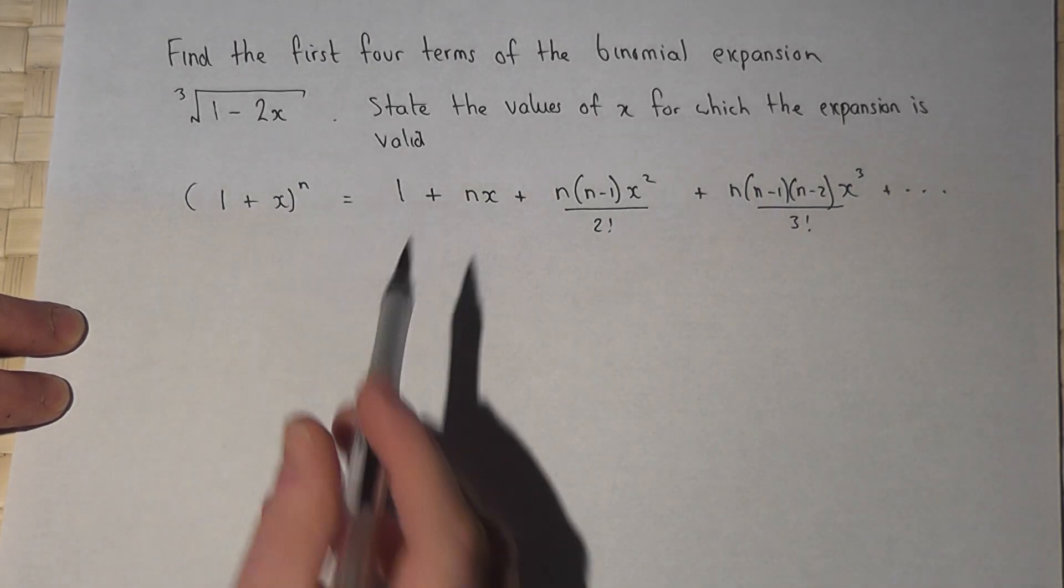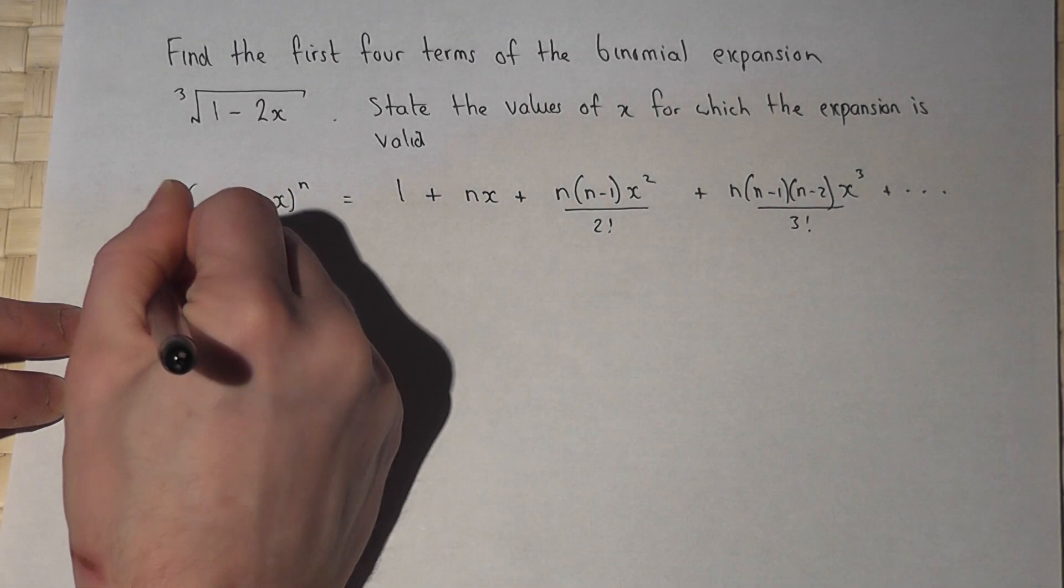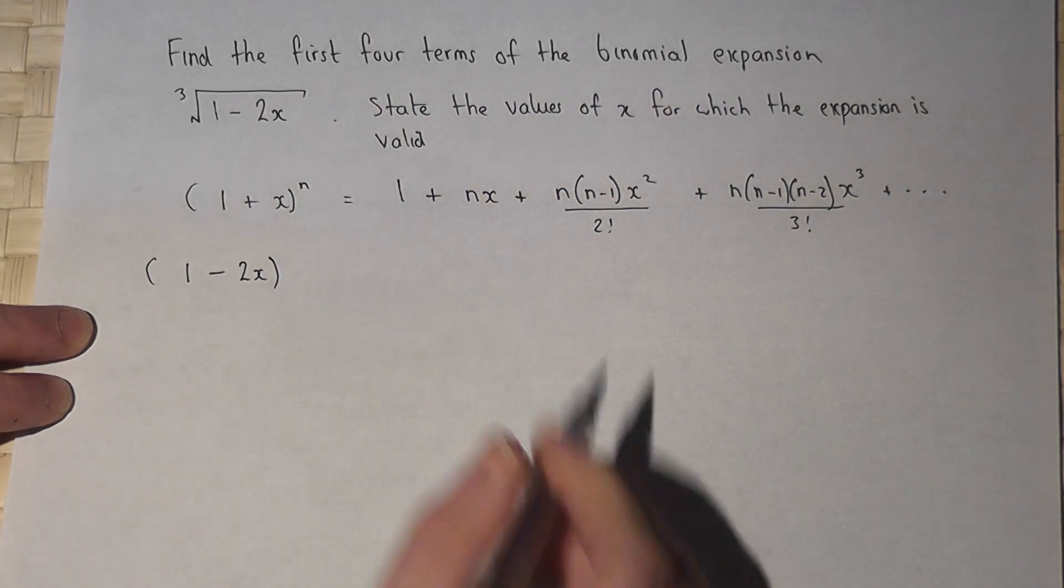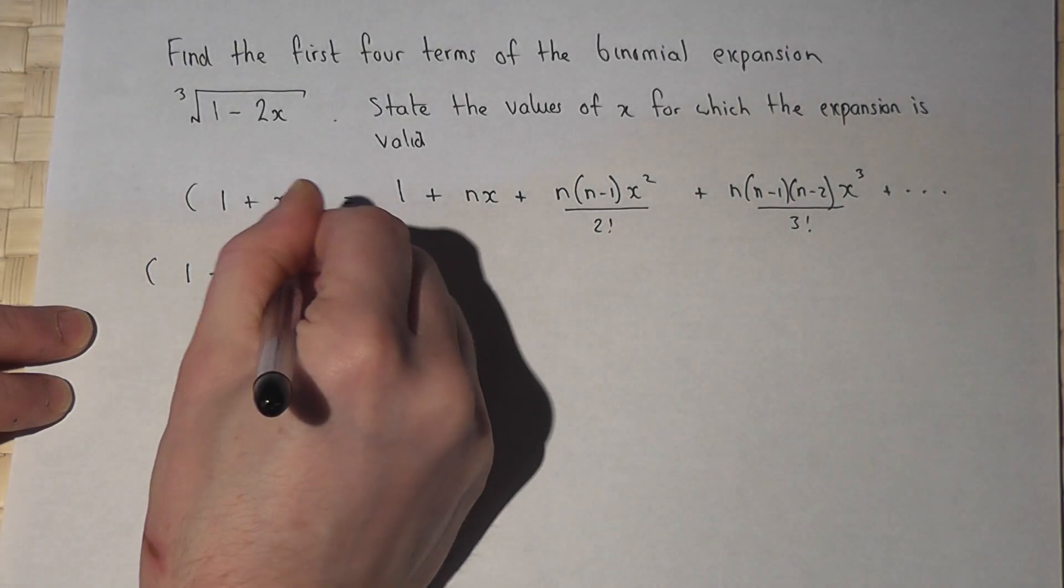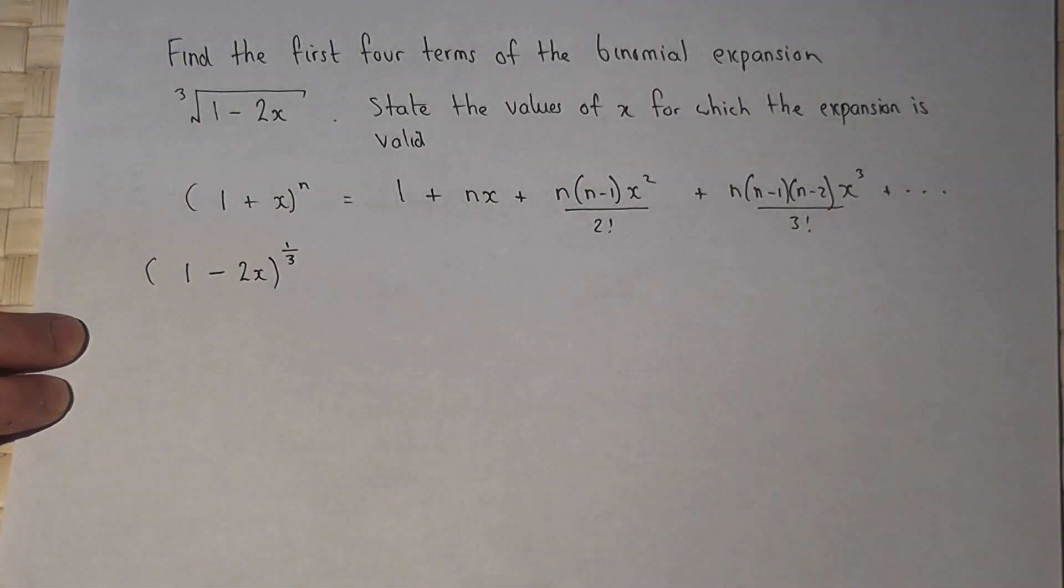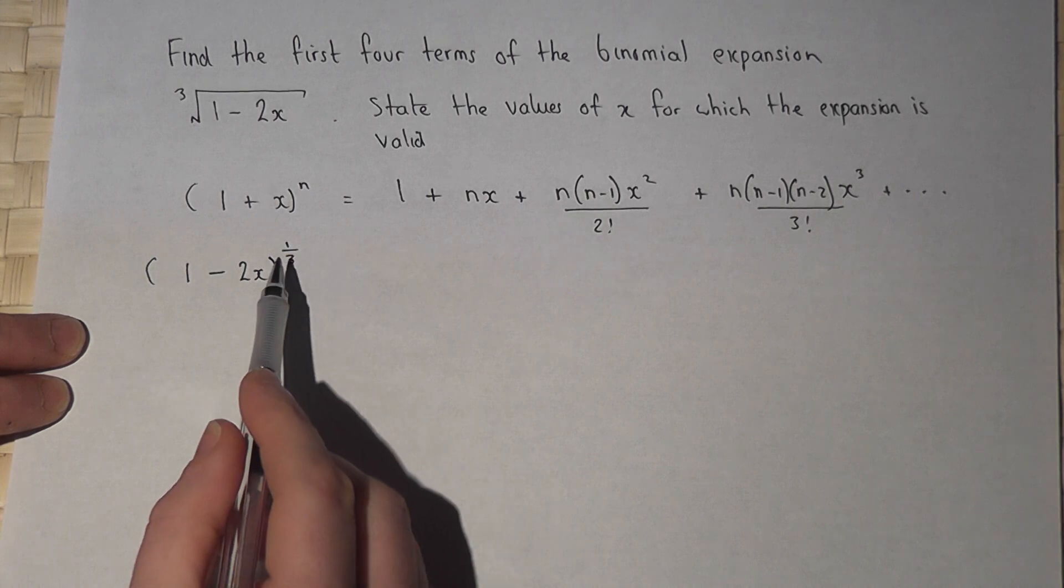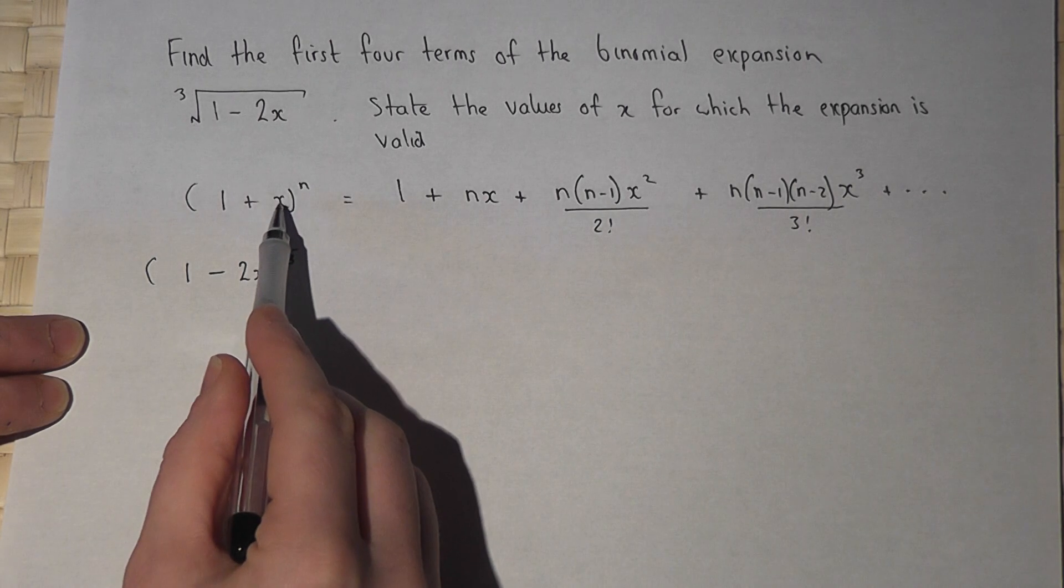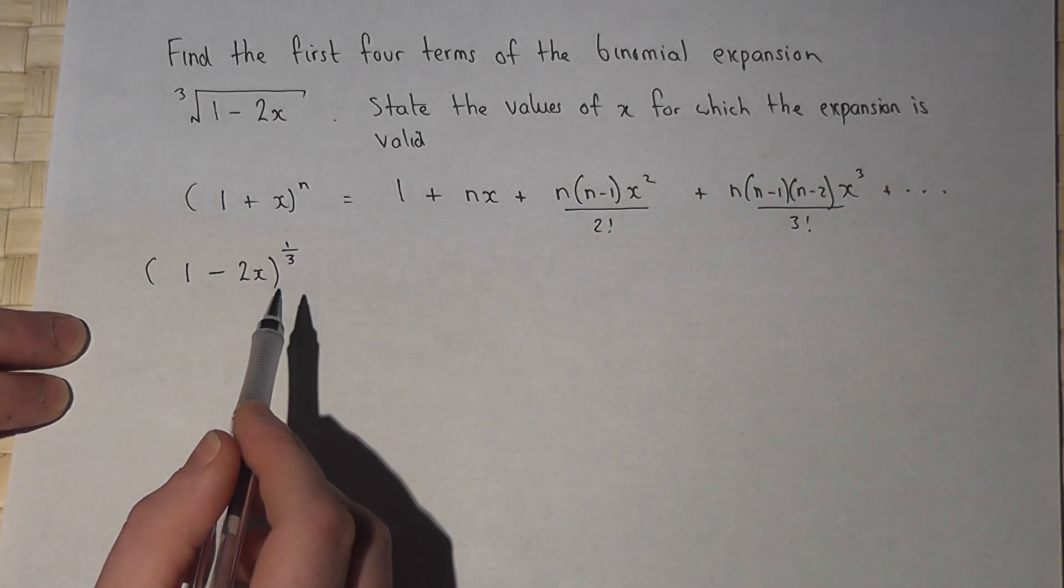So my question is 1 minus 2x. Now the cube root is a power of a third. So in my case n equals a third and x in the general form is now minus 2x.